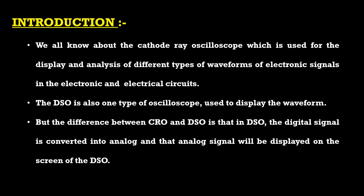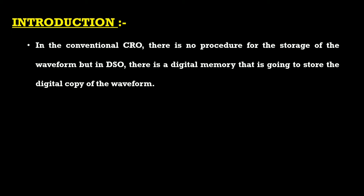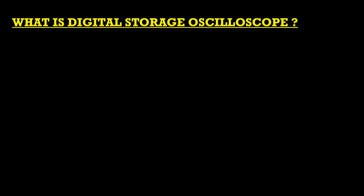In the DSO, the digital signal is converted into analog, and that analog signal is displayed on the screen. In the conventional CRO there is no procedure for storage of the waveform, but in the case of the DSO there is a digital memory that stores a digital copy of the waveform.